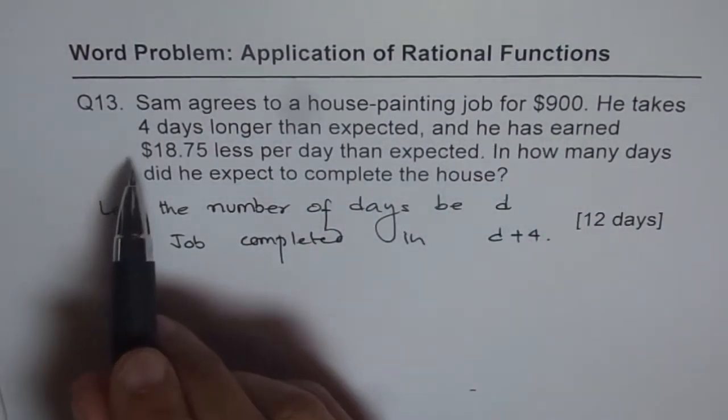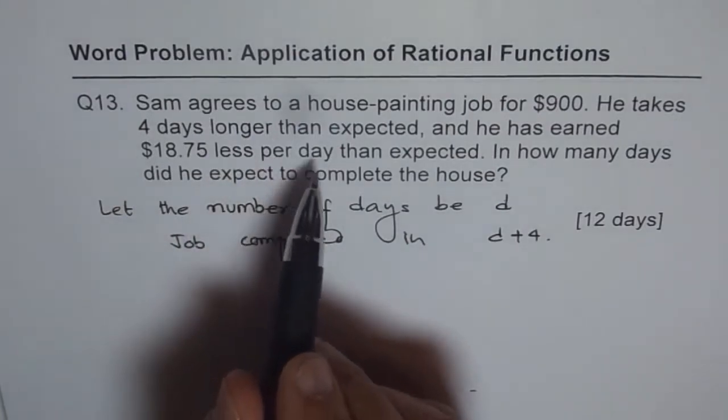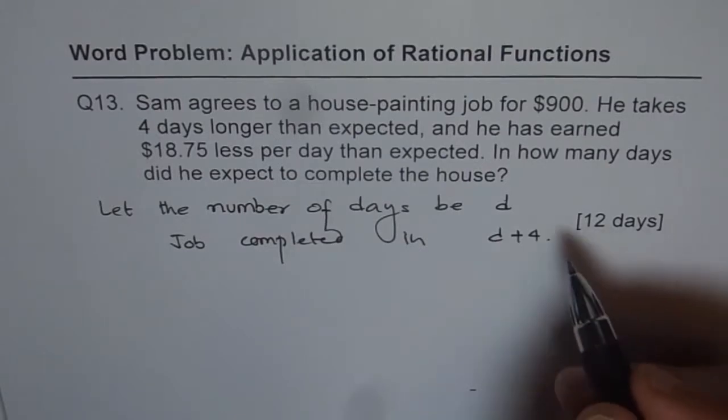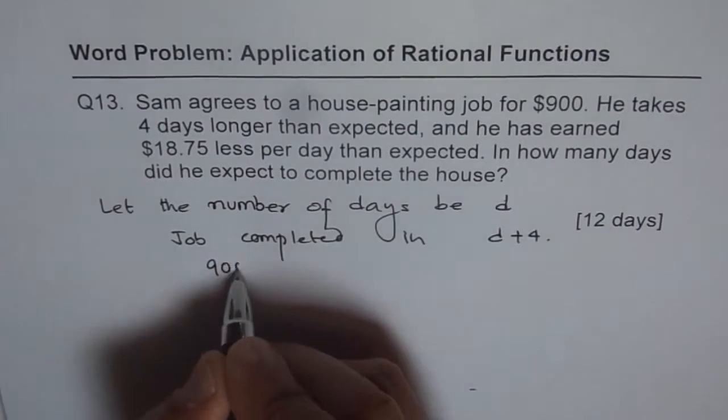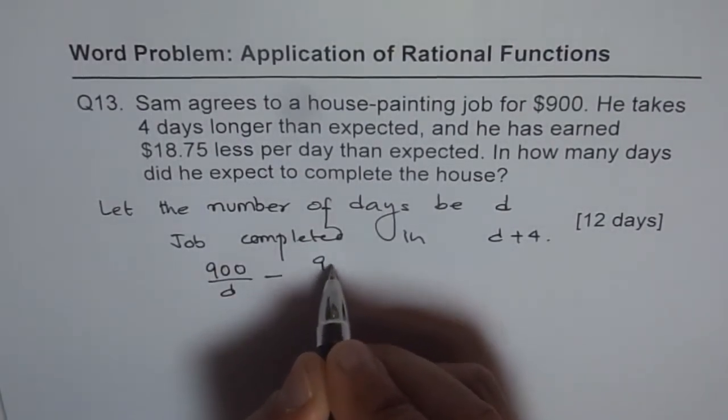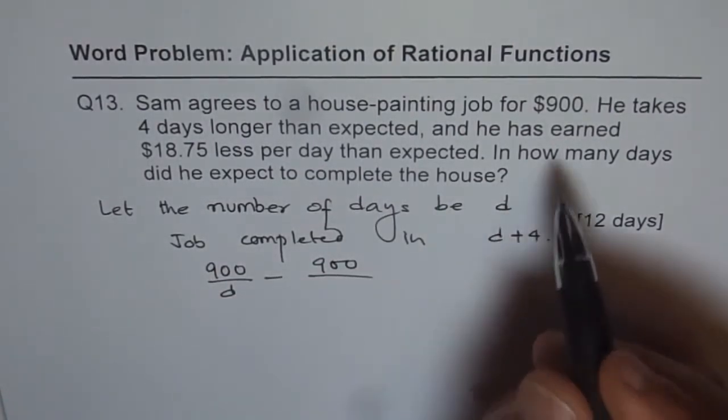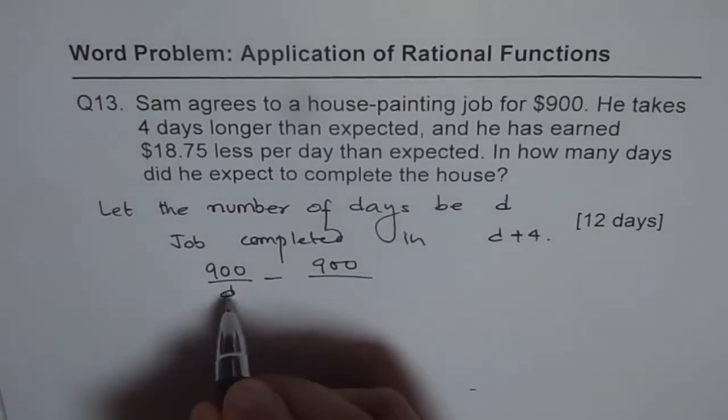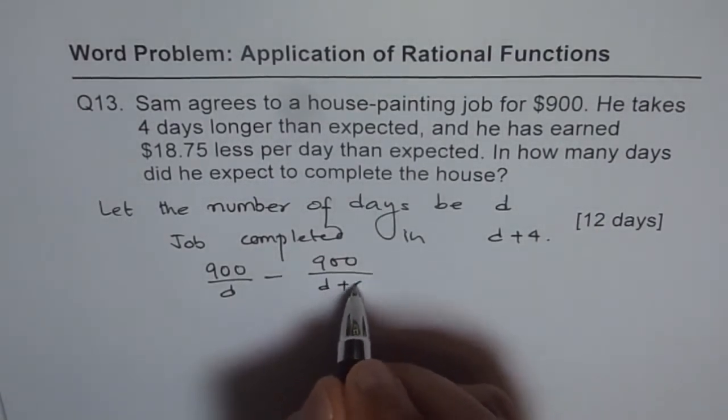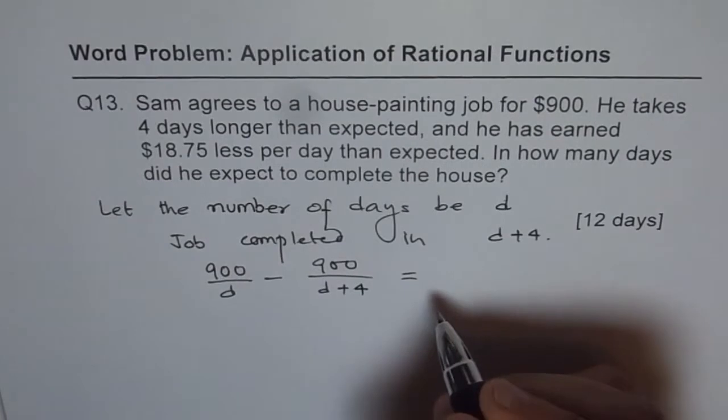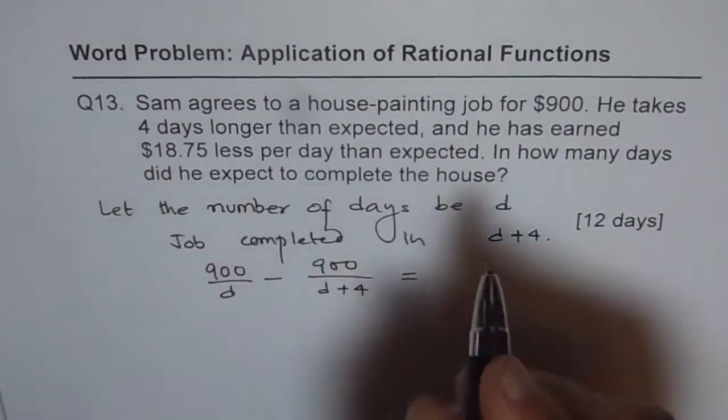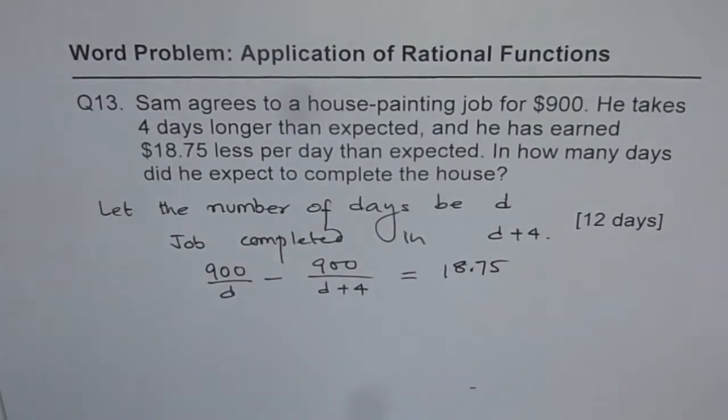And he earns $18.75 less per day, so that means we have to just find the difference of per day cost. So which one was higher? Less of the days, higher the cost. So we'll do 900 divided by D minus 900, because ultimately he's going to get only $900, whether the job is completed in X days or Y days. So in this case it is D days or D plus 4 days. And this loss is, and he has earned so much less per day, is $18.75. That is how you get your equation.